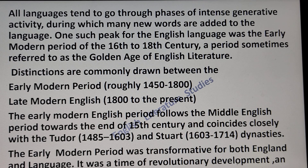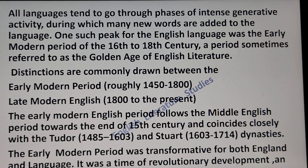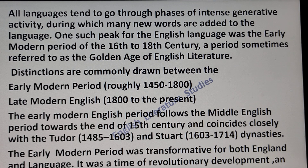The Early Modern period spans approximately 1500 to 1800, while the Late Modern English period runs from 1800 to the present. The Early Modern English period follows the Middle English period towards the end of the 15th century and coincides closely with the Tudor and Stuart dynasties. The Early Modern period was transformative for both England and the English language — it was a time of revolutionary development and the opening for English to become a worldwide language.